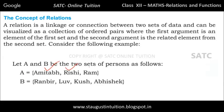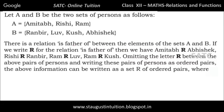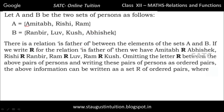Consider the following example. Let A and B be two sets of persons. Set A contains Amitabh, Rishi, and Ram. Set B contains the second group. This is a relation 'is father of' between the elements of set A and B. For example, Amitabh is the father of Abhishek. Rishi is the father of Ranbir. Ram is the father of Love, and Ram is also the father of Kush.